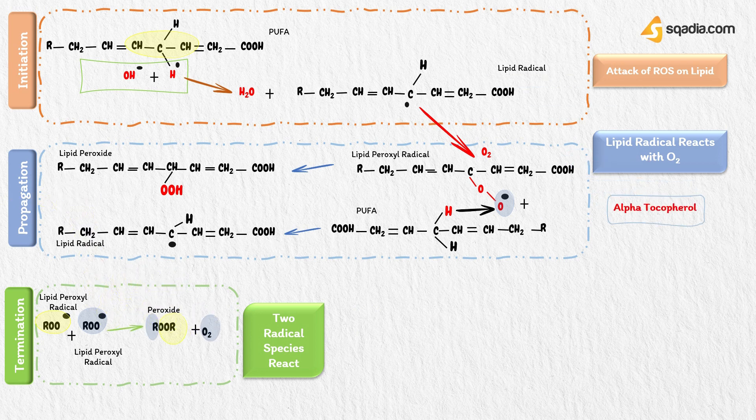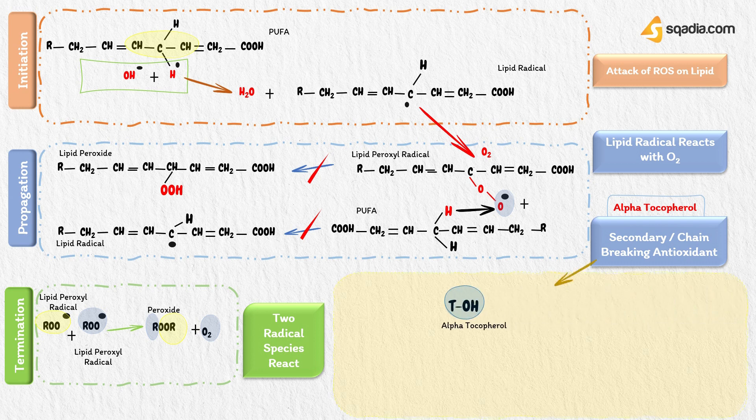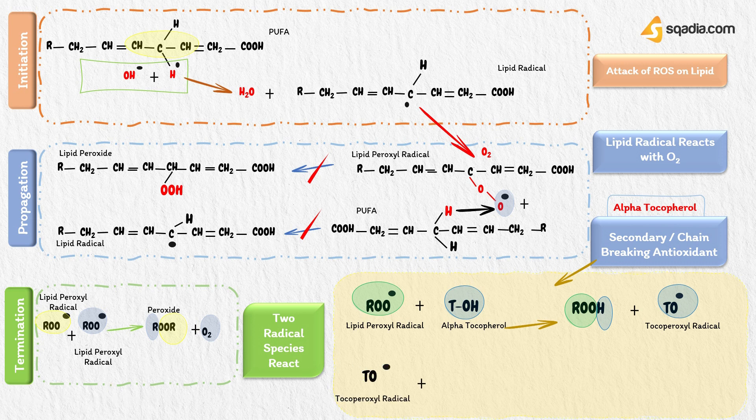Alpha-tocopherol is a secondary or a chain-breaking antioxidant. It inhibits the propagation phase. So, alpha-tocopherol intercepts the lipid peroxyl-free radical. Tocopheroxyl radical will be formed. This tocopheroxyl radical then reacts with another lipid peroxyl radical and is converted to an inactive product.